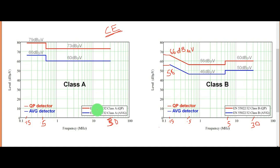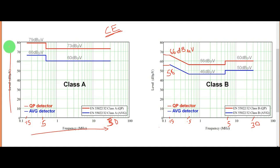Let us now understand the EN standard, which is for the European Union and European market — that is EN 55022 / 32. In this chart, the x-axis shows frequency and the y-axis shows the dB level. The red line stands for quasi-peak and the blue line stands for average peak.